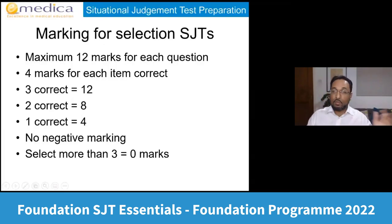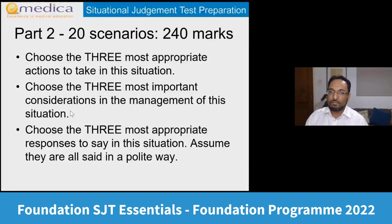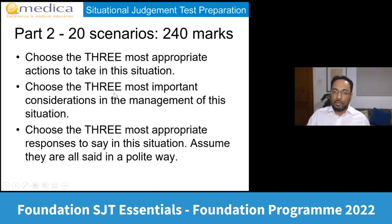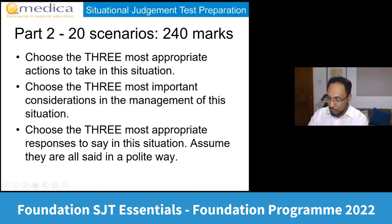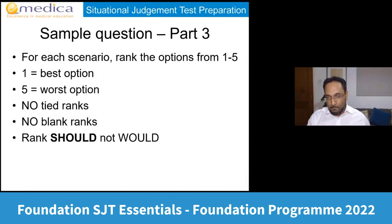Marking for part two: maximum 12 marks each — four marks for each correct choice, so all three correct gives 12, any two gives 8, any one gives 4. If you try to select more than three, it will delete the first one. To recap part two: 20 scenarios, each worth 12 marks maximum, for 240 marks total. There are three subtypes: three most appropriate actions, three most important considerations, and three most appropriate responses to say. Now let's move on to part three — the ranking section — which carries half the marks.